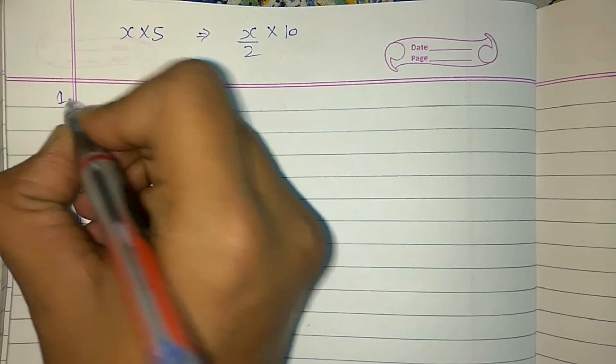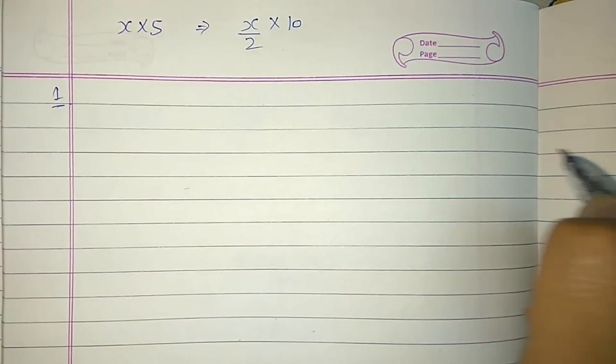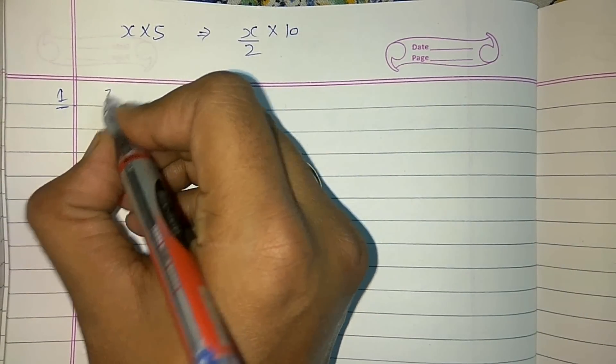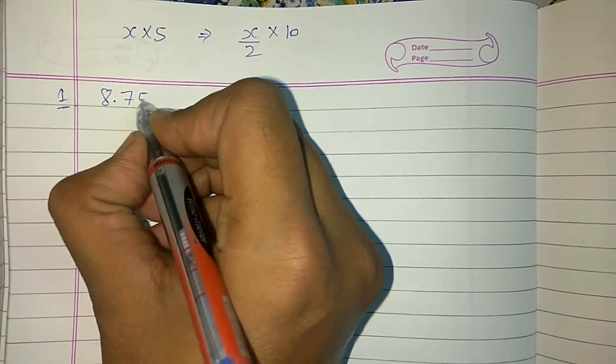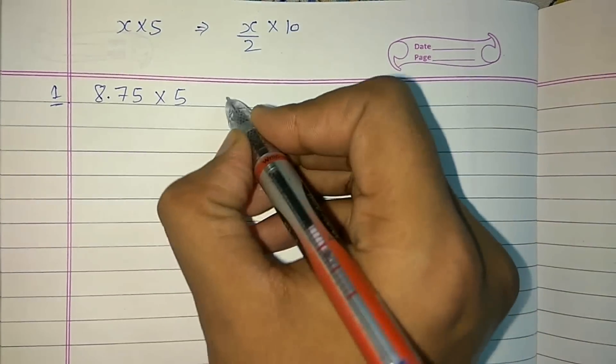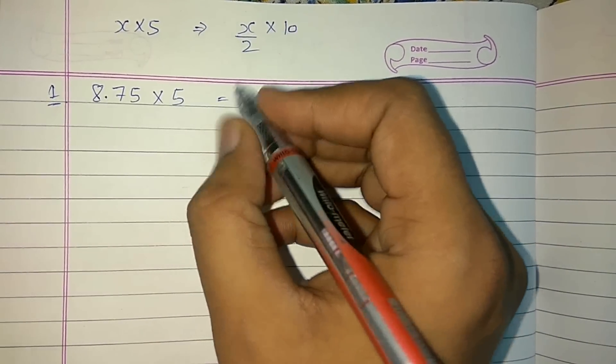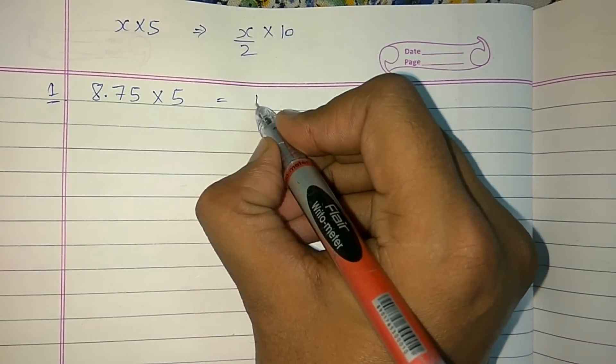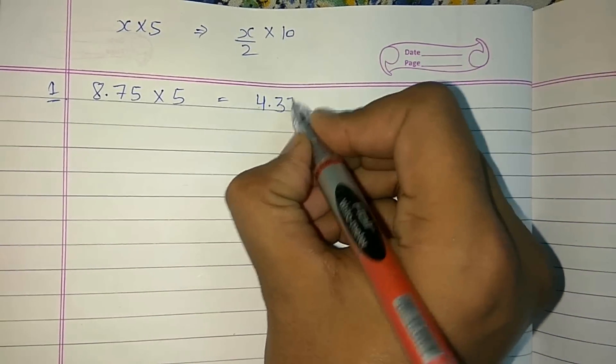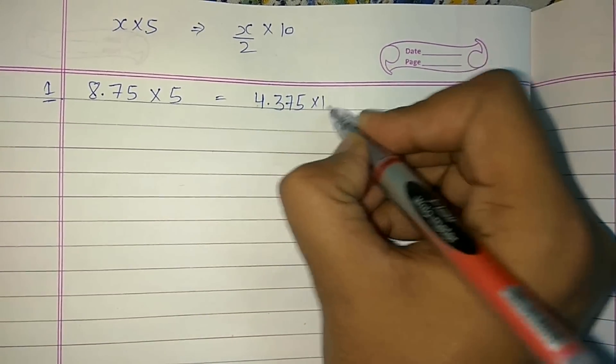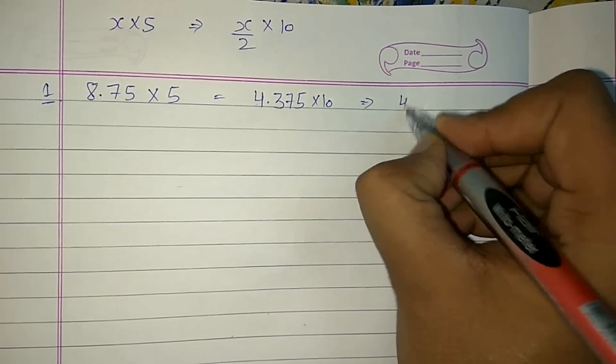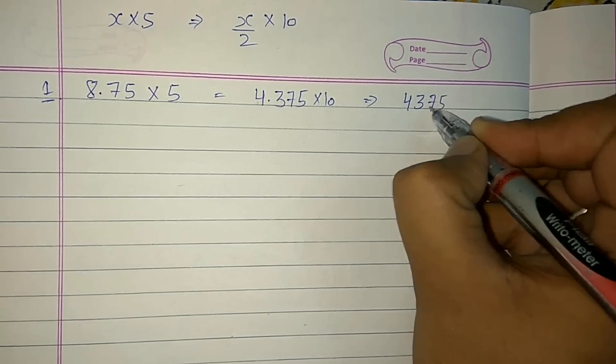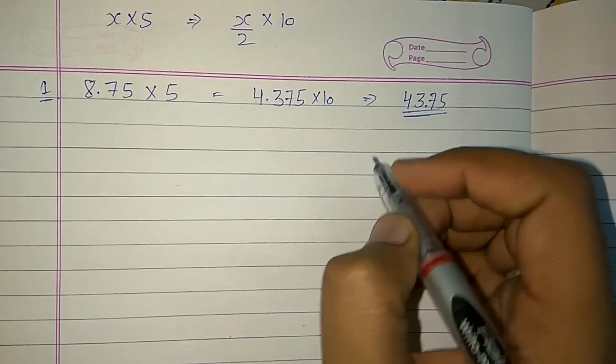Let's take our first example. Let's take a decimal number, 8.75, to be multiplied by 5. When you find half of this number, it will give you 4.375. When you multiply it by 10, it will be 43.75. That's the solution. See, it's so simple.